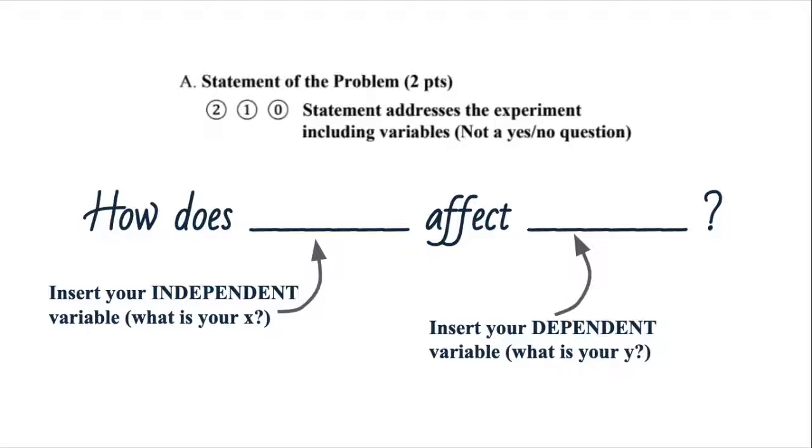Let's start with A, statement of problem. It says here that statement addresses the experiment including variables, not a yes or no question. So here's a little template for you guys to follow. It's very straightforward. How does blah affect blah? So the first one is your independent variable, as in, what are you going to change? What is your x value? And how does changing or manipulating that value affect the outcome of something else?